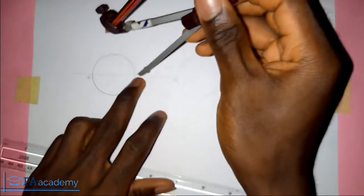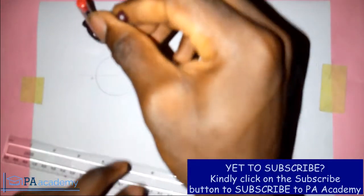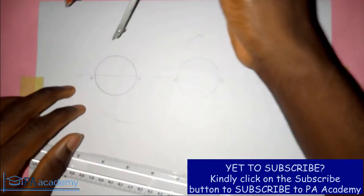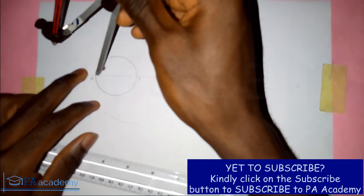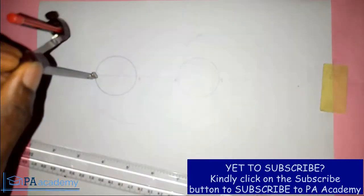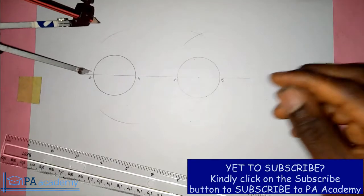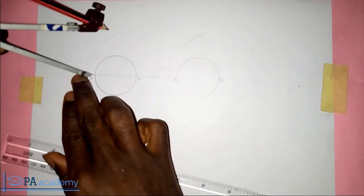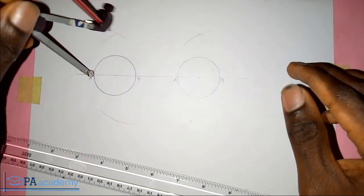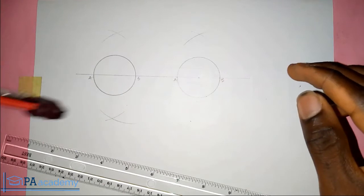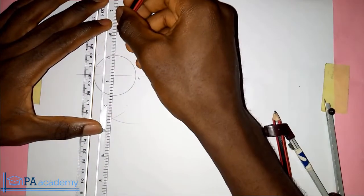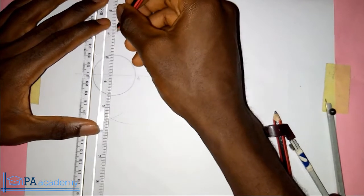So let's do the same thing to this other circle, then from point A. What you are going to do next is to join it, by the time you are joining it will pass through the center.